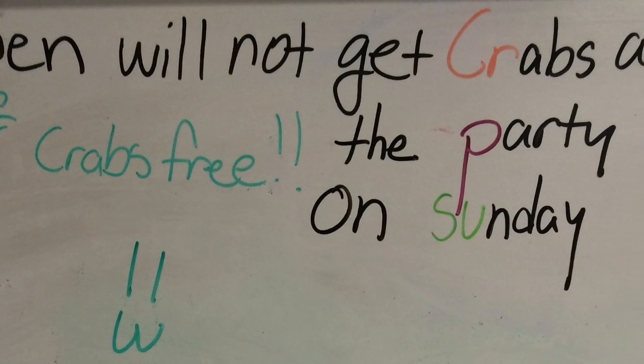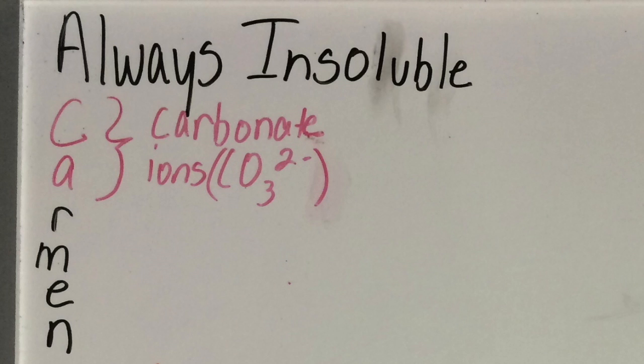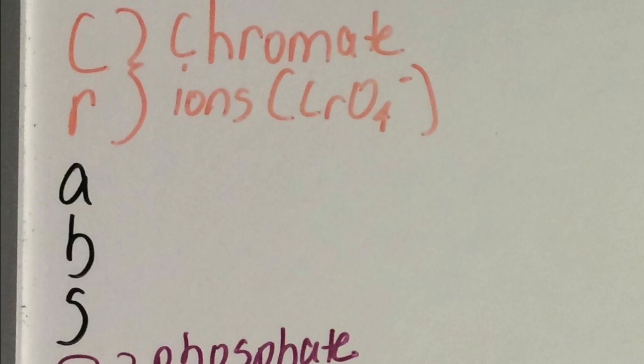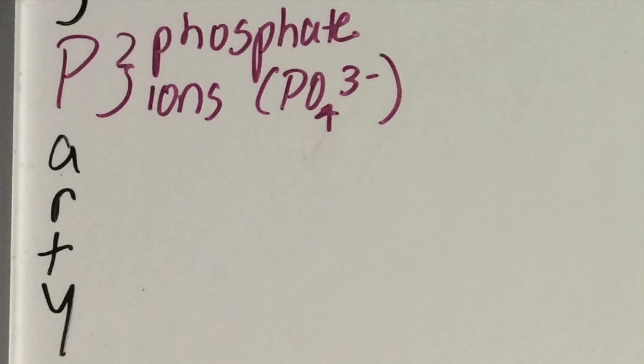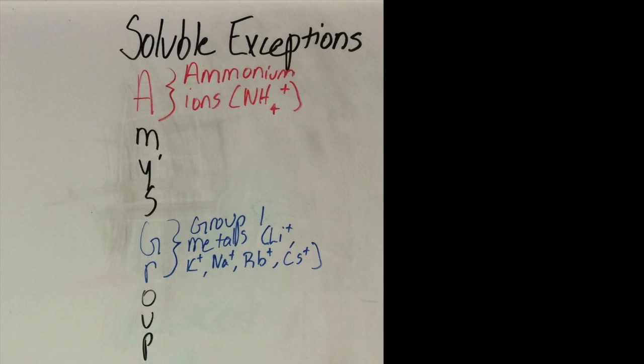So for the water insoluble rules, Carmen will not get crabs at the party on Sunday unless she is with Amy's group. Carmen stands for carbonate, which is CO3 2-, crabs is chromate, which is CRO4 2-, the party is phosphate, which is PO4 3-, and Sunday are the sulfide ions, which is S2- charge, unless she is with Amy's group.